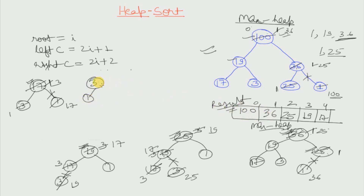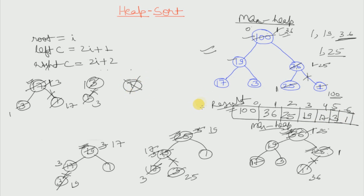We again do the same operation — we replace 3 with the last element, unlink it, and store 3 in the resultant array. Then we max heapify, but there is only one element so there is no need to max heapify and it stops. The structure now has only one node, 1, so we simply put it in our resultant array and remove it from the max heap. This is how a heap sort works.